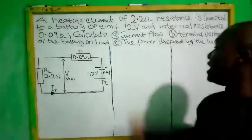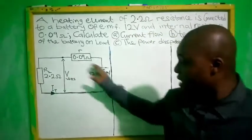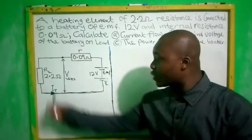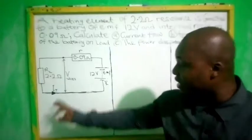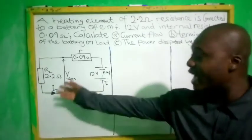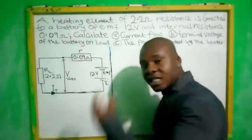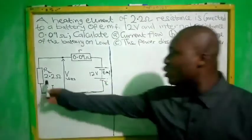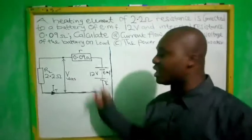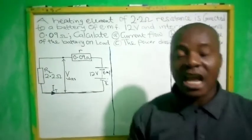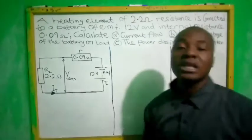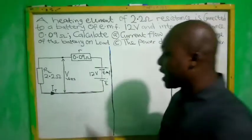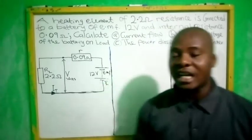Calculate: (a) current flow, (b) terminal voltage of the battery on load, (c) power dissipated by the heater. We retrieve the diagram from the question. We need to calculate the current flowing through this energized circuit. The EMF is the generated voltage of the battery. When a load is connected, there will be a terminal voltage, and the terminal voltage will be lesser than the EMF.